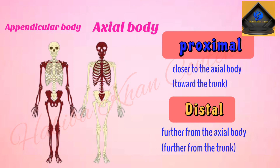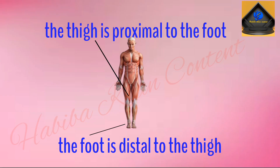Remember that the axial body consists of the head, neck, and trunk, and the appendicular body consists of limbs or appendages that are added to the axial body. Proximal means closer to the axial body or toward the trunk of the body, and distal means further from the axial body or further from the trunk of the body. So we would say the thigh is proximal to the leg, or you could say the leg is distal to the thigh.